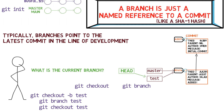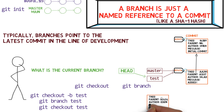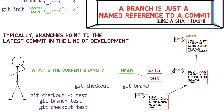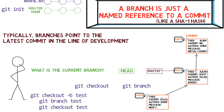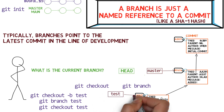Let's consider the current state. What happens if we make some changes and create a new commit using git commit? Which branch will the new commit be added to? The answer is the test branch, as this is the active branch since HEAD points to it. So, after the new commit object is created, the pointer test will point to it. Note that HEAD still points to test, and then test points to the new commit.